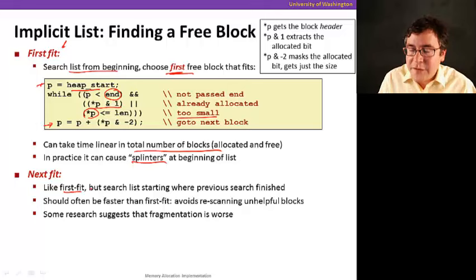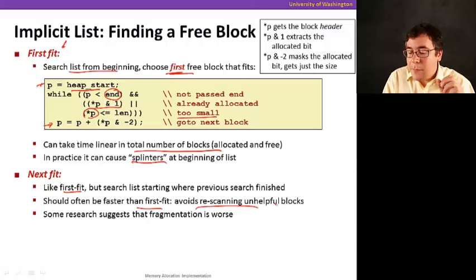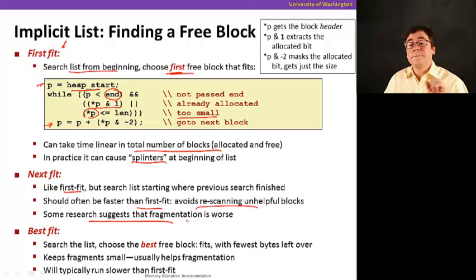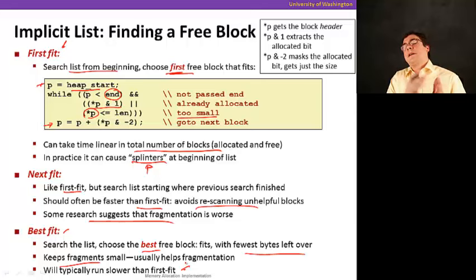So now the next fit is just like first fit, but you start from where you stopped during the last, when you stopped when you did the last malloc. So it should often be faster than first fit, because it avoids rescanning blocks that are unhelpful. But some research suggests that fragmentation is worse. Now there's something else called the best fit, which you search the entire list and you find the best free block, which is the one that has the fewest bytes left over. By the way, splinters, in case it wasn't clear what I said, is when you tend to find blocks that are too big for what you need, so there's a little bit more waste. So best fit, we don't have that problem, because you're always going to find the one that's the best one among the free blocks that you have. The one that's the smaller one that's sufficient to honor your request. So this, of course, keeps fragmentation small, and it helps, so it usually helps fragmentation. And typically, it runs slower, because you're going to have to look at the entire list, as opposed to stopping when you find the first one.